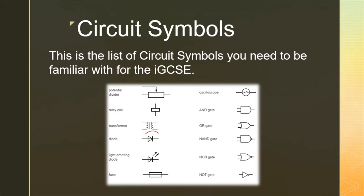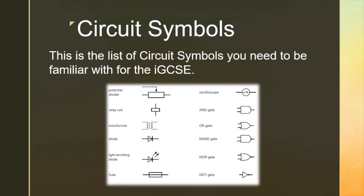The next two are diodes: this is a standard diode, which I'm going to talk about in a minute, and this is a light-emitting diode, which is going to feature later on in the lesson. And this one here is a fuse, which is coming up in a second. We then have an oscilloscope, which I'm going to cover in a completely separate lesson, and then a series of logic gates, which we're going to spend quite a few lessons talking about later in the year.